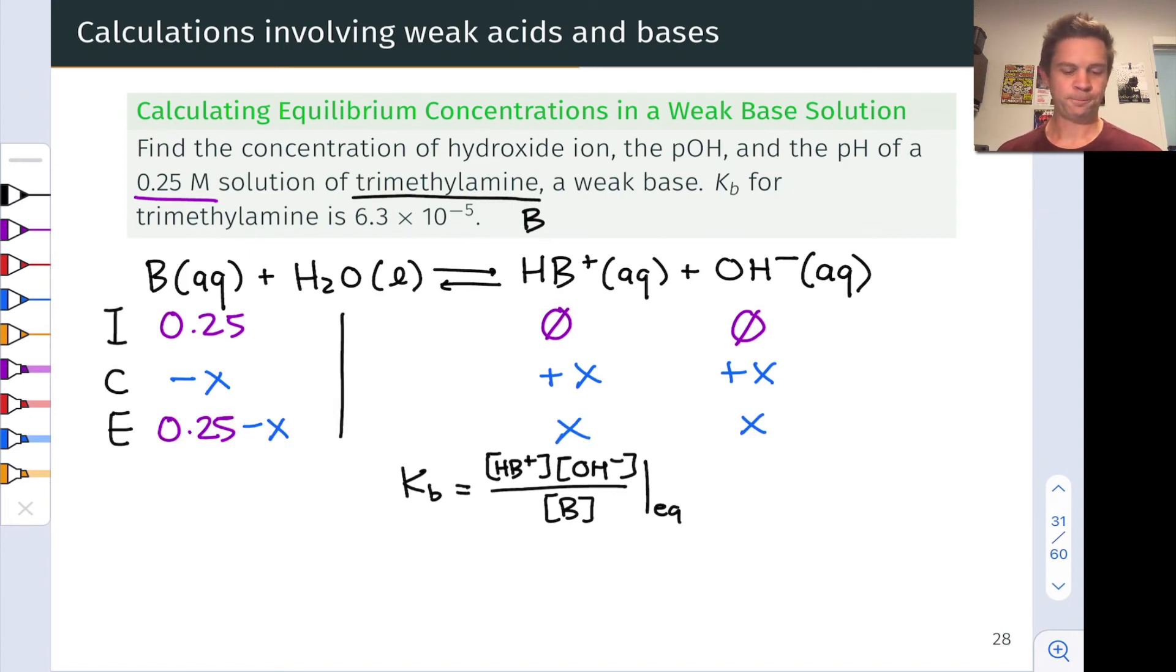Now before we plug into the equilibrium equation at the bottom, we can note that 0.25 minus X is likely to be very close to 0.25, so we can assume the two are equal.